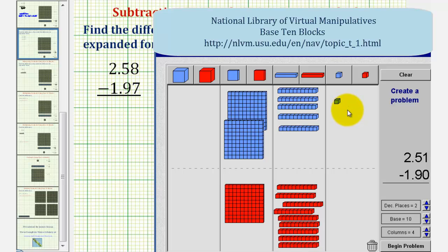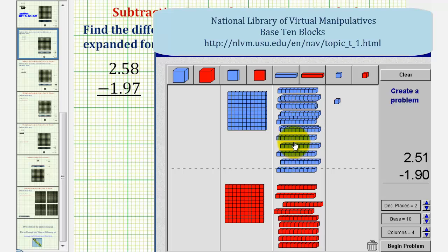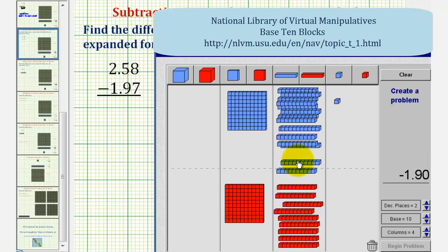Now looking at the longs, or the tenths place value, we have five longs, we want to remove nine longs. Notice how we only have five longs, we don't have enough to remove nine longs. So perform an exchange, we'll exchange one flat for ten longs, and now we have enough longs to remove nine longs.